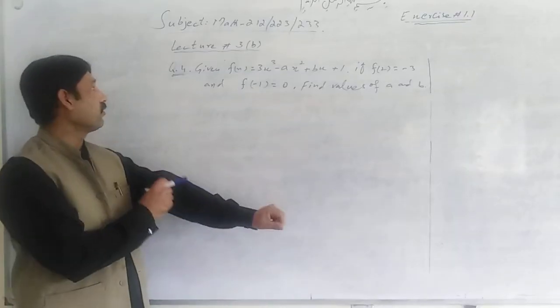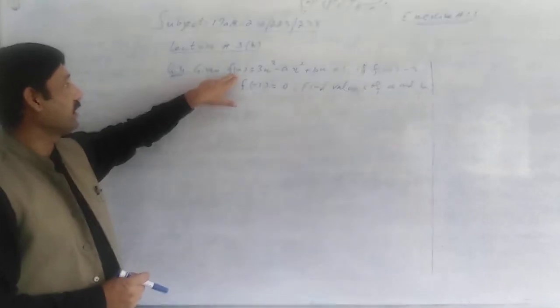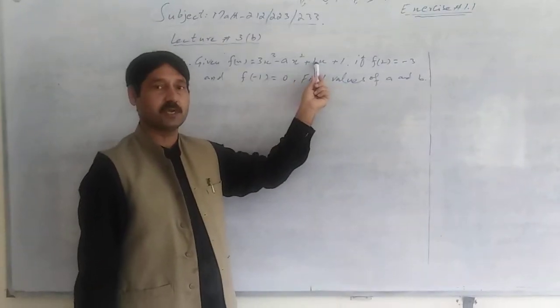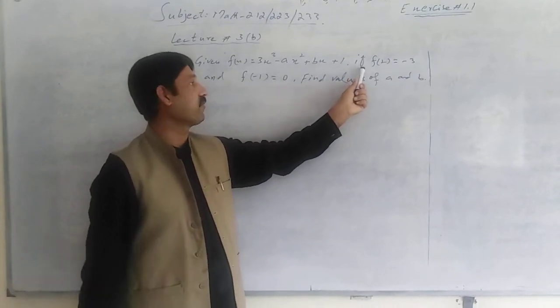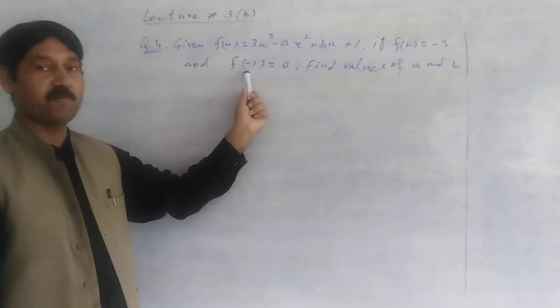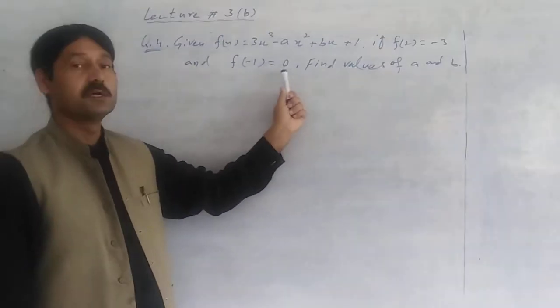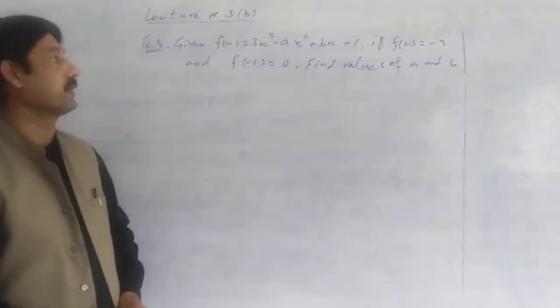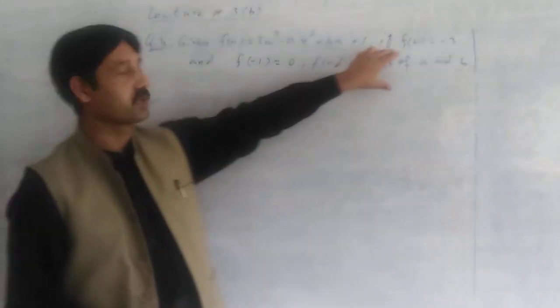Next, problem number 4: given f of x equals 3x cube minus ax square plus bx plus 1. The conditions are: if f of 2 value is minus 3, f of minus 1 value is 0, find the values of a and b. We have a and b values to find. What do we do? We use the conditions in the given condition.